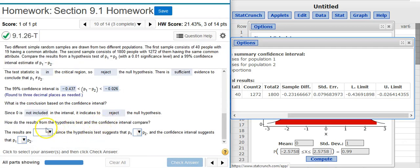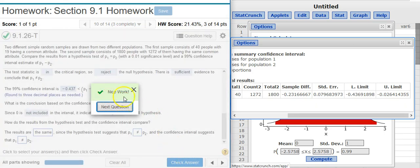And now the last part of the problem asks, How do the results from the hypothesis test and the confidence interval compare? Well, notice here in both cases we rejected the null hypothesis. So the results are going to be the same. In each case we suggested that the population parameters are not equal to each other, because we rejected the null hypothesis which says that they are equal to each other. I checked my answer. Nice work!